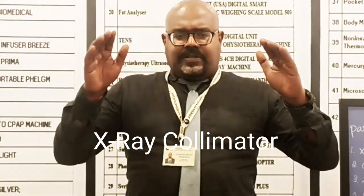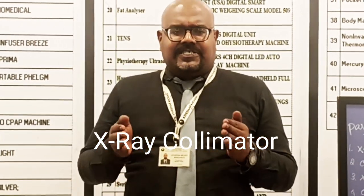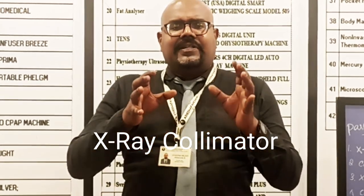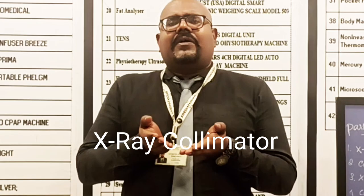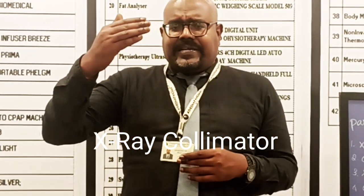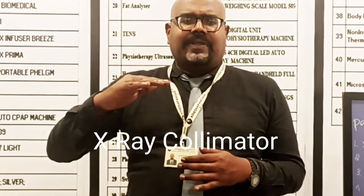After the X-ray panel, one more small device is attached. What is the device and what is the purpose of that particular device? That is what we are going to see in this video. This particular part is called a collimator. After the X-ray is produced from the X-ray tube, it will come out from the panel and reach the collimator. So what is the purpose of the collimator — we are going to see that in this video.